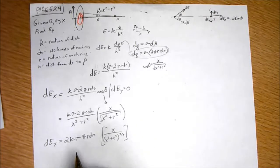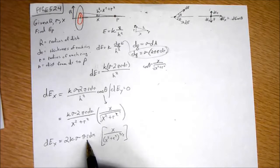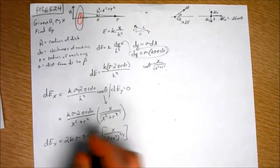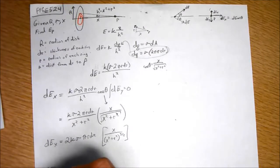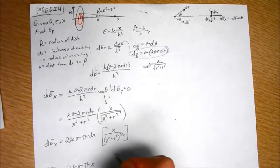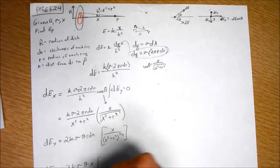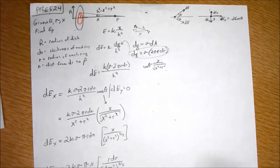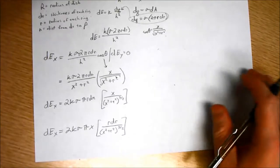We're integrating with respect to R, so I need to group all the stuff I actually have to integrate. Let me write that one more time. DEX equals 2K sigma pi X. And then, that leaves me with R dr over X squared plus R squared to the three halves.